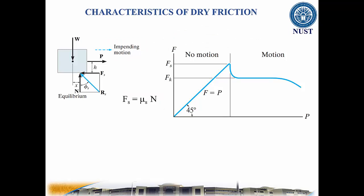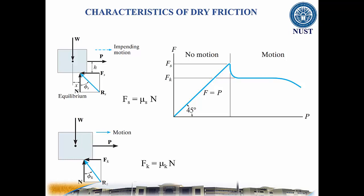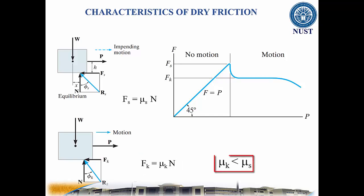Mu is called the coefficient of static friction. The value of this coefficient depends on the surface characteristics of the two materials in contact. Once the block begins to move, the frictional force typically drops and is given by this equation. The value of mu_K — the coefficient of kinetic friction — is always less than mu_S for the same type of surfaces.